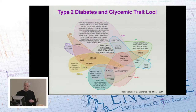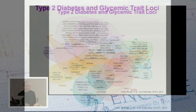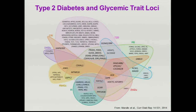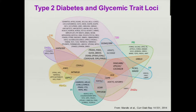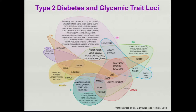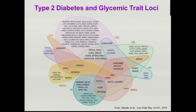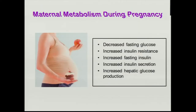Looking at type 2 diabetes and a variety of related glycemic traits, as someone interested in the genetics of the disease, what we see is that as we've developed larger and larger cohorts, there's a large number of genes shown to be associated with the disease or the phenotypes. But in most cases we don't know the functional variation responsible for this, and in many cases don't yet understand how the specific gene products contribute to the phenotype.